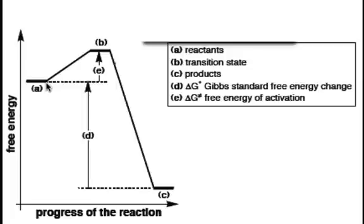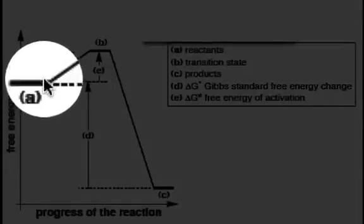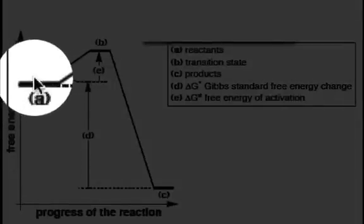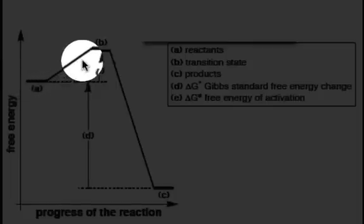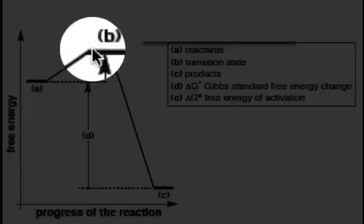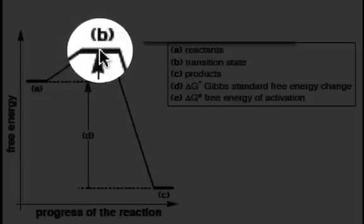The first of which is the reactants. The reactants are going to be on the left side of the progress of reaction. As the reaction proceeds, the reactants will go through an energy change and go through this maximum here, B, known as the transition state.